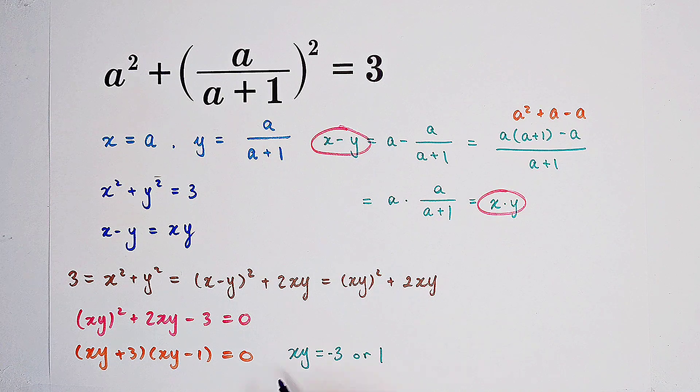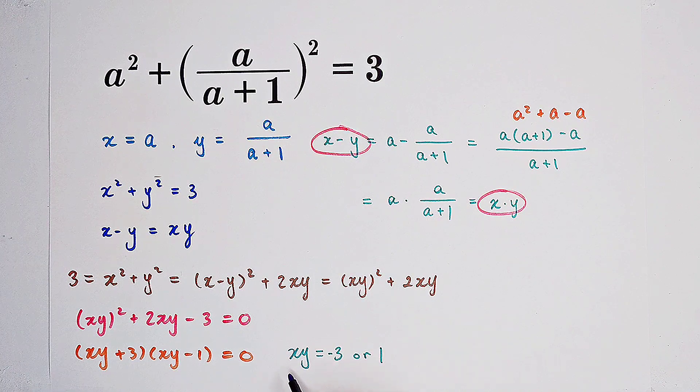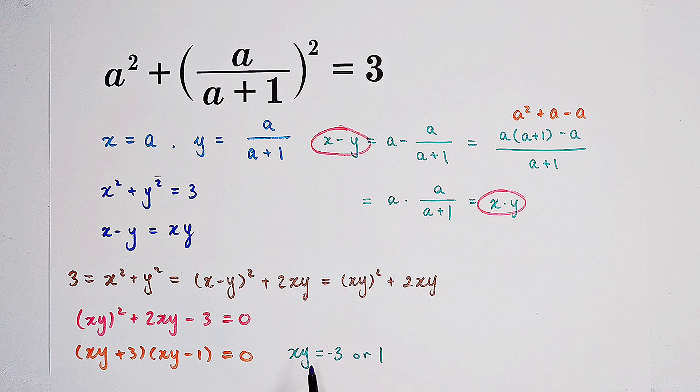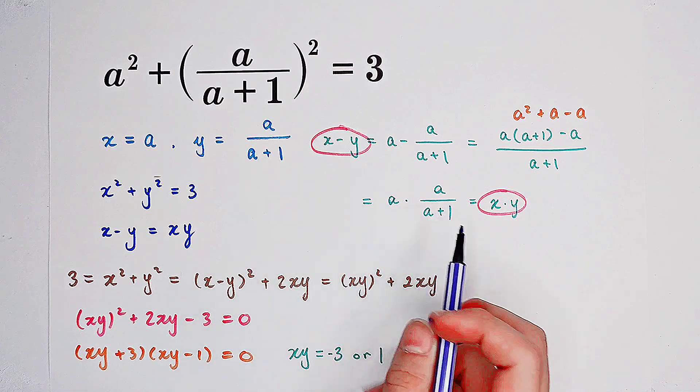So in our first case, x times y equals negative 3. Because x times y is just a times a times a over a plus 1.